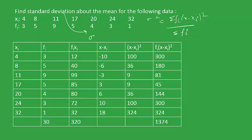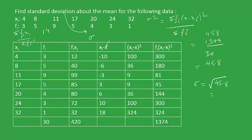To calculate variance, instead of |xi minus x-bar|, we use (xi minus x-bar) squared, then multiply by fi to get sigma fi (xi minus x-bar) squared, divided by sigma fi. This equals 1374 upon 30, giving a variance of 45.8. The standard deviation is the square root of 45.8. For example, xi minus x-bar gives 4 minus 14 equals minus 10, and working through the table gives a standard deviation of 6.7.